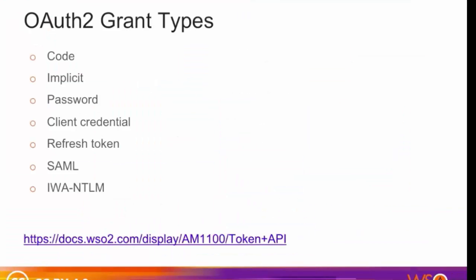OAuth 2.0 provides several grant types. Code: entering the username and password at the service provider generates a code, which can then be used to obtain the access token. Implicit: similar to code, but directly provides the access token instead of a code. Password: authenticates the user using the password provided and the access token is returned. Client credential: uses the client key and client secret — if provided correctly, the access token is sent. Refresh token: enables the user to obtain a new access token using the refresh token once the original is used up. SAML: uses SAML as the grant type to obtain the access token. IWA NTLM: similar to password grant type but specific to Microsoft Windows users.